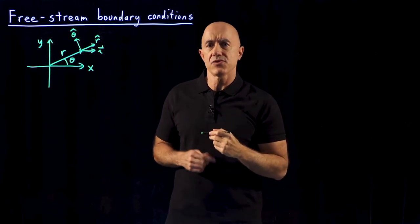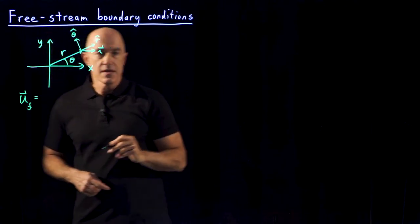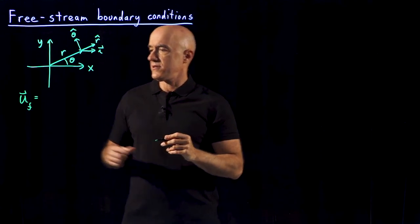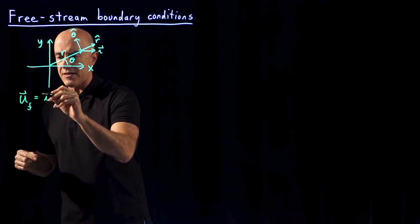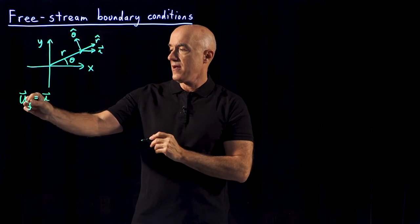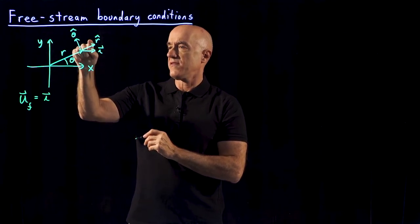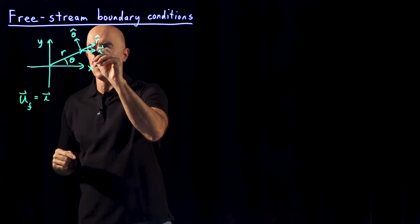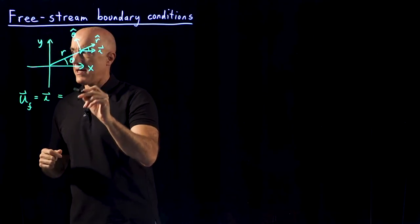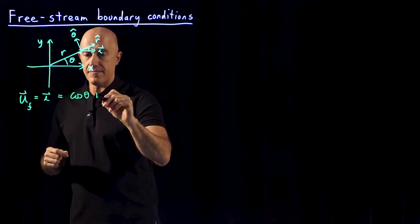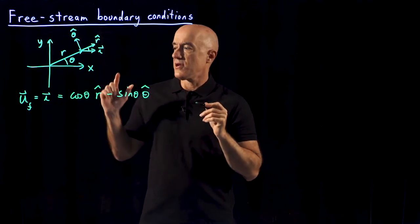So what is the free stream boundary condition? We have the velocity field in the free stream. In our non-dimensionalized system of equations, we've used the velocity of the free stream to non-dimensionalize the system. So this is just the unit vector in the x direction, with a magnitude of velocity equal to 1. If we decompose i into components in the direction of r and in the direction of theta, this angle is theta, and doing the trigonometry using unit vectors, this will be cosine theta r hat minus sine theta theta hat. So that's our free stream velocity.